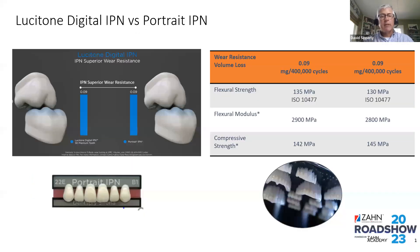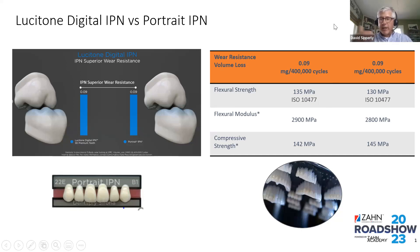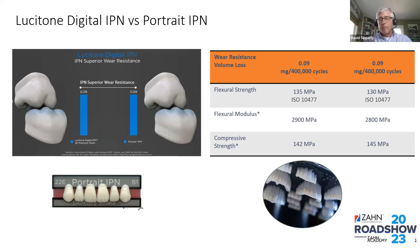A BL1 corresponds to Portrait White 4 and a BL3 corresponds to Portrait White 2. People often ask how Digital IPN compares to Portrait IPN. Looking at the data: flexural strength is roughly the same, wear resistance (tested at 400,000 chewing cycles measuring volume loss) is 0.09 — basically the same. Flex modulus and compressive strength are also essentially the same. You can honestly say Digital IPN is as good or better than carded Portrait IPN, which has won the Townie Award for Best Prosthetic Denture Tooth 12 consecutive years.